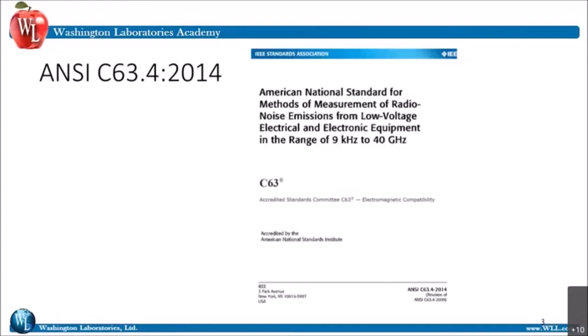Let's start with ANSI C63.4. The 2014 version is currently being used by most places. It is the national standard for methods of measurements of radio noise emissions from low voltage electrical and electronic equipment. It has a range of 9 kilohertz to 40 gigahertz. There are a few things that go to 40 gigahertz, but not that many. We do see a lot of low frequency devices at this time in various things like RFID.